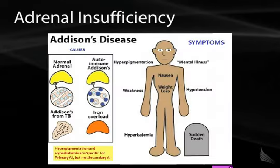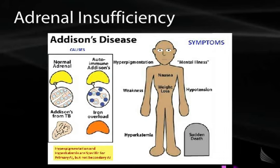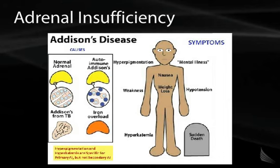The most common cause of primary adrenal insufficiency or Addison's disease in the United States is autoimmune adrenalitis. In the rest of the world, the most common cause is tuberculosis. Any process that damages the adrenal gland — through infiltration, tumor, or autoimmune disease — can lead to Addison's disease. Main symptoms include nausea, weight loss, weakness, and hypotension, which in severe stress situations can be life-threatening.